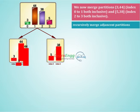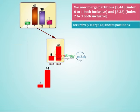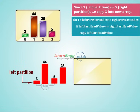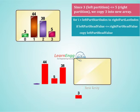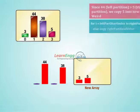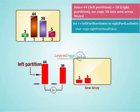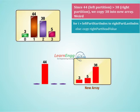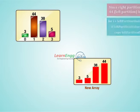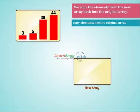We now merge partitions: array [3, 44] at index 0 to 1 (both inclusive) and array [5, 38] at index 2 to 3 (both inclusive). Since 3 (left) is less than or equal to 5 (right), we copy 3 into the new array. Since 44 (left) is greater than 5 (right), we copy 5 into the new array. Since 44 (left) is greater than 38 (right), we copy 38 into the new array. Since the right partition is now empty, we copy 44 from the left partition into the new array. We copy the elements from the new array back into the original array.